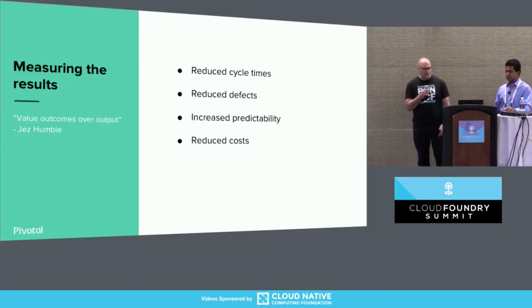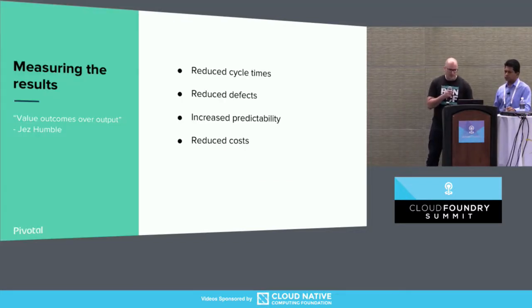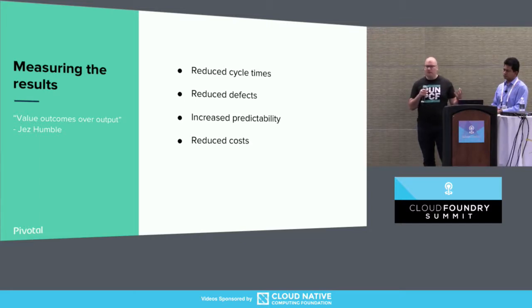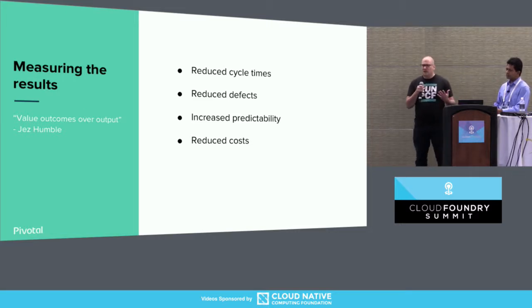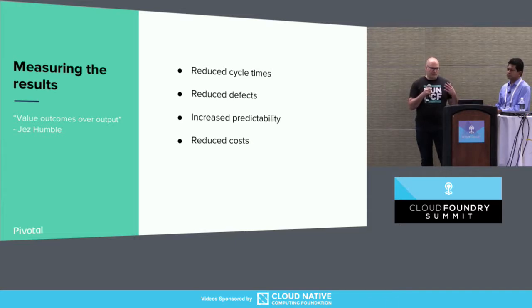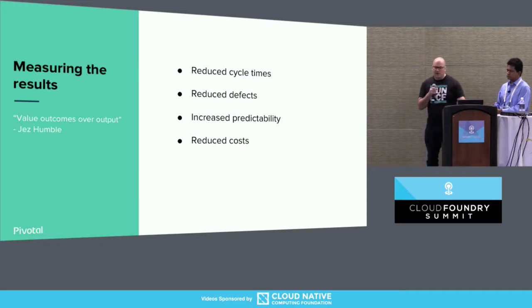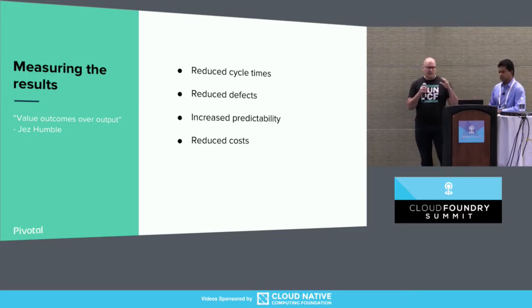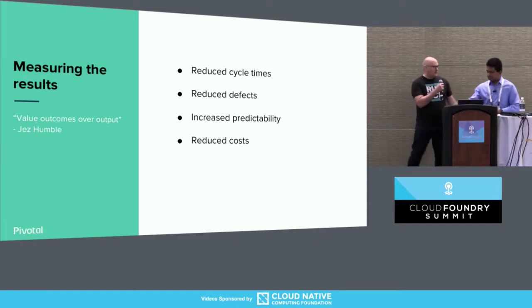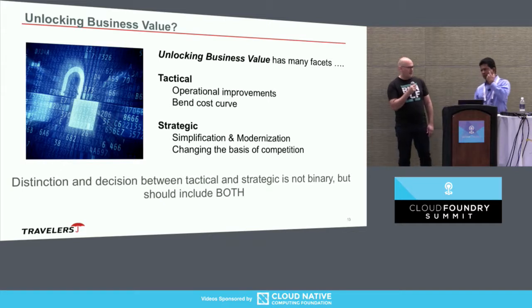I want to wrap up by talking about measuring the results. For engineers, it's easy to get caught up in technical details and the mechanics of migration or modernization. But our talk today is really about business value. Jez Humble talks about outcomes over output, and the key outcomes he describes are things like reduced cycle times, reduced defects, increased predictability in development cycles, and reduced costs. We're going to review how, by working with Pivotal, Travelers was able to implement and migrate apps onto PCF and make progress towards these outcomes and deliver real business value.